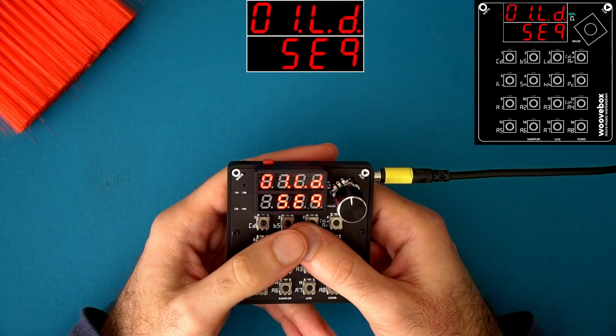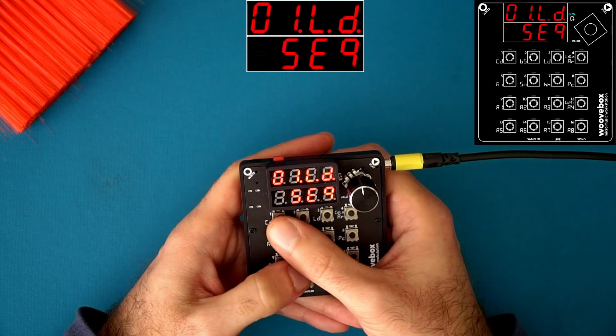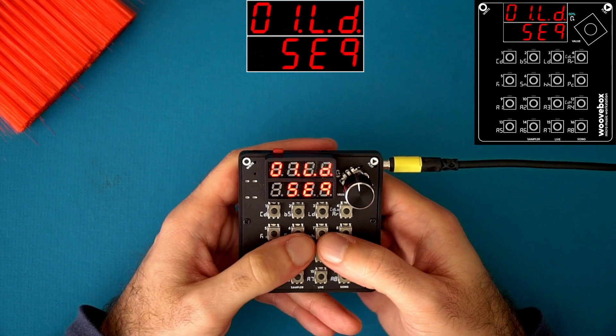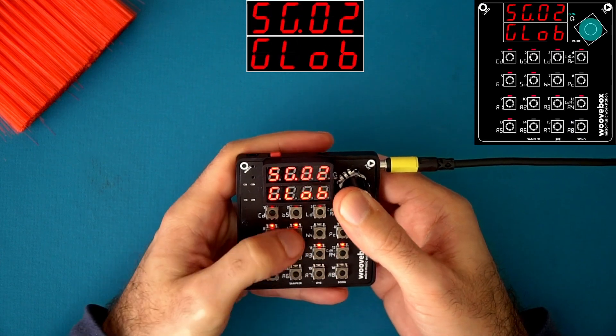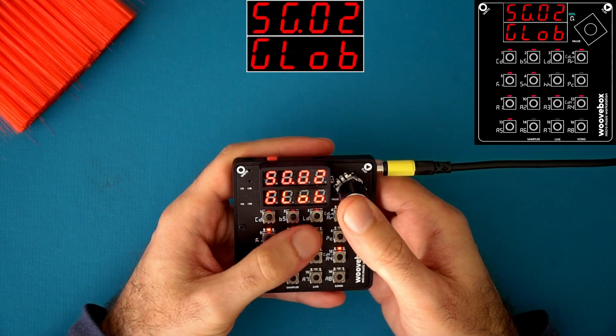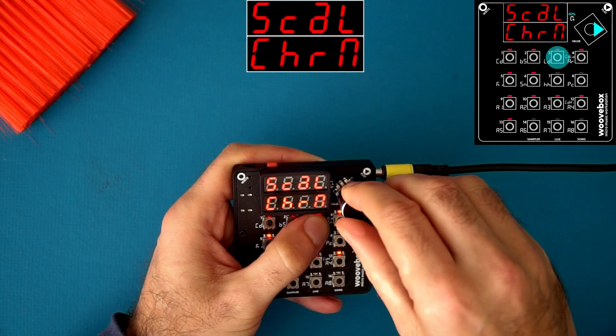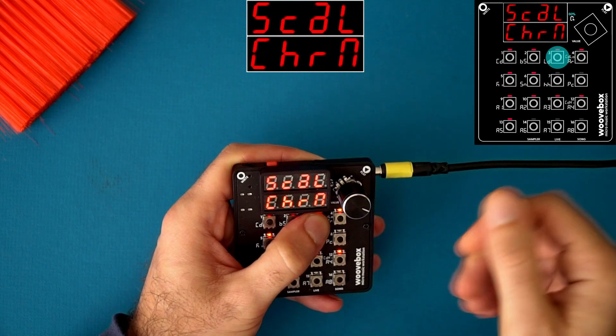Another new exciting thing is the addition of two scales to choose from, one of them being the Teenage Engineering Pocket Operator scale. So this is awesome if you're used to jamming on a pocket operator. So the way you set scales on the woof box is you hold the encoder, press button 16 to go to song mode and it's going to be on key three. So right now it's set to major. Let's go to all the way to the end and well, you have chromatic.